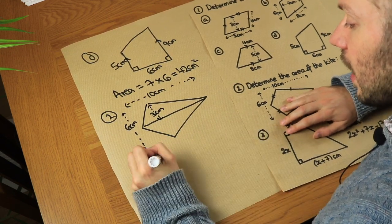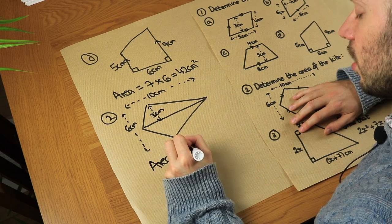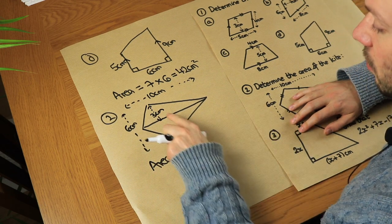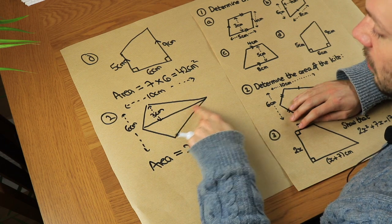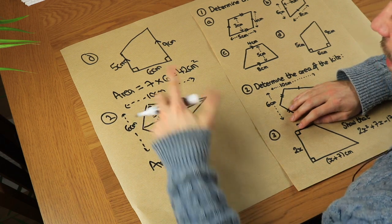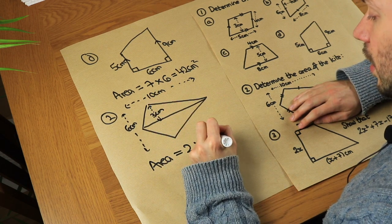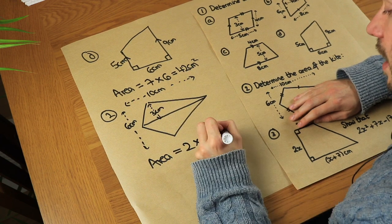The height of each triangle is going to be half of six, which is three. So the area is going to be two lots of — because we've got two triangles.